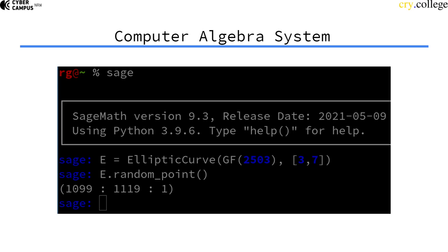But wait, a curve is a pair of x and y coordinates, right? So what is this third value here?